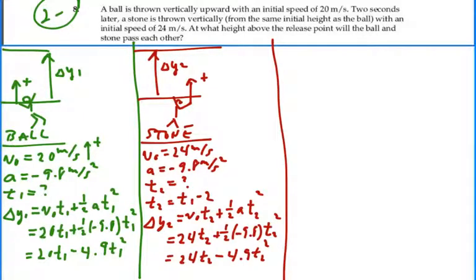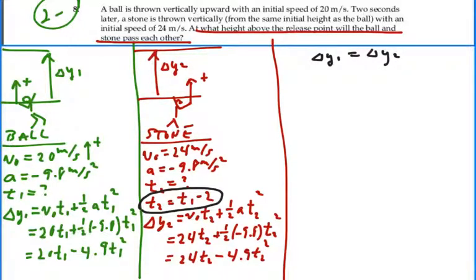Alright, so we have two equations with two unknowns, and we can actually connect the two by the fact that the times are related. t2 equals t1 minus 2. Also, we know that the condition in the problem was at what height will the ball and the stone pass each other. For that to happen, they must have the same displacement. So it must be true that displacement delta y1 is equal to displacement delta y2, regardless of how they got to that final position. In other words, delta y1 might have gone up something like this, and delta y2 might have just gone straight there. But they're still at the same height when they pass each other.